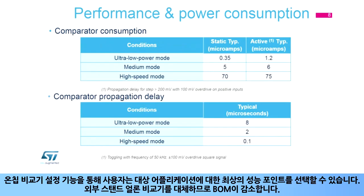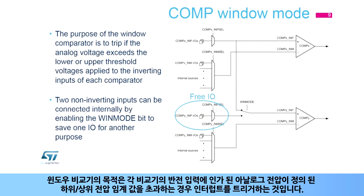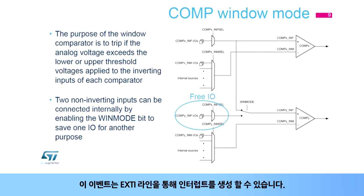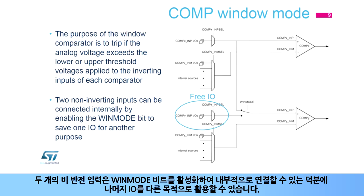The on-chip comparator configuration capability allows the user to select the best performance point for the targeted application, replacing the external stand-alone comparator and thereby reducing the bill of materials. The window comparator triggers an interrupt if the analog voltage goes beyond the defined lower and upper voltage thresholds applied to the inverting inputs of each comparator. This event can generate an interrupt through the EXTI line. Two non-inverting inputs can be connected internally by enabling the WIN mode bit, saving one I/O for another purpose.